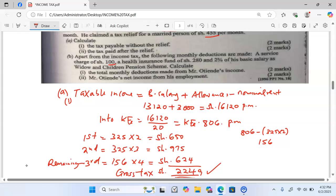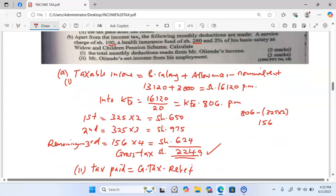A service charge of 100, a health insurance of 280, and 2% of his basic salary as window and children pension scheme. Calculate the total monthly deductions from Mr. Otyende's income.